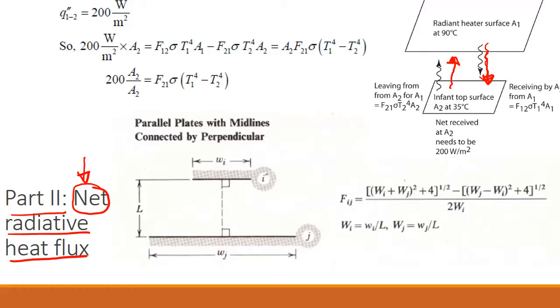It is the net effect of these two quantities. What is given is this net amount, the flux Q double prime from surface 1 to surface 2, which should be equal to 200 watts per meter squared.